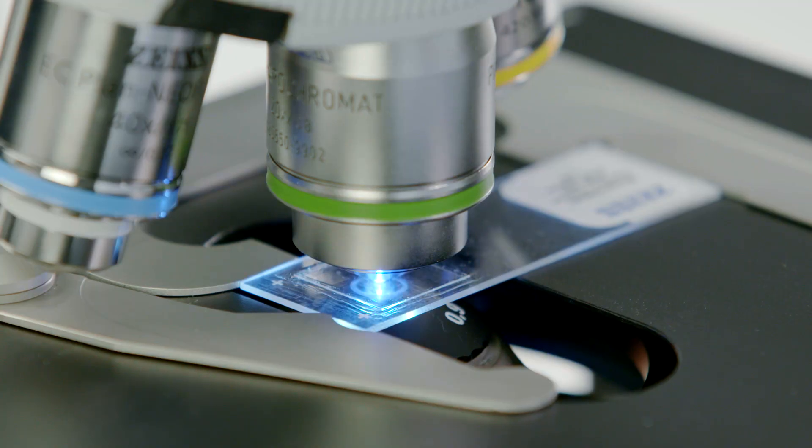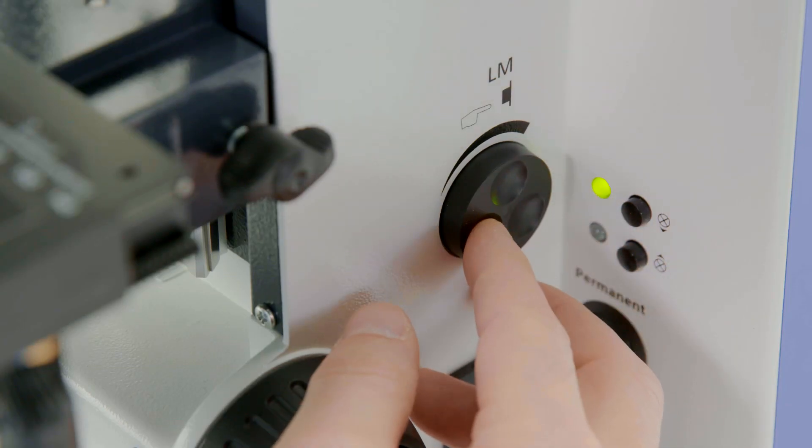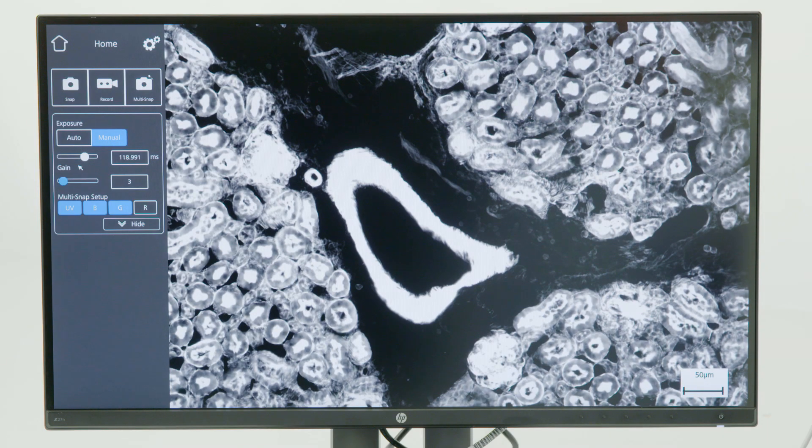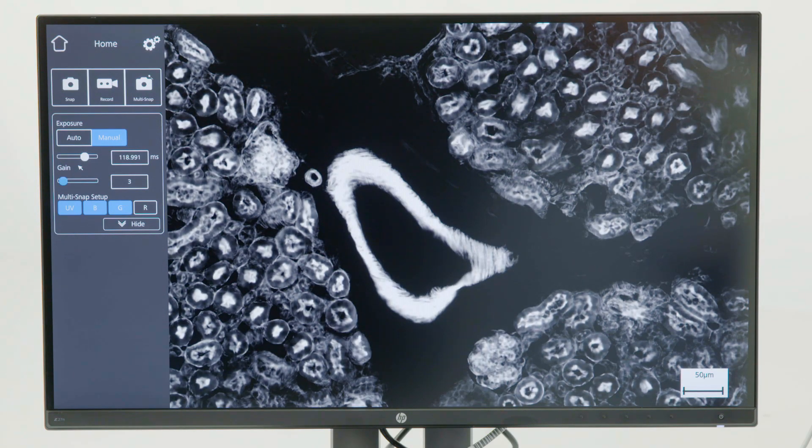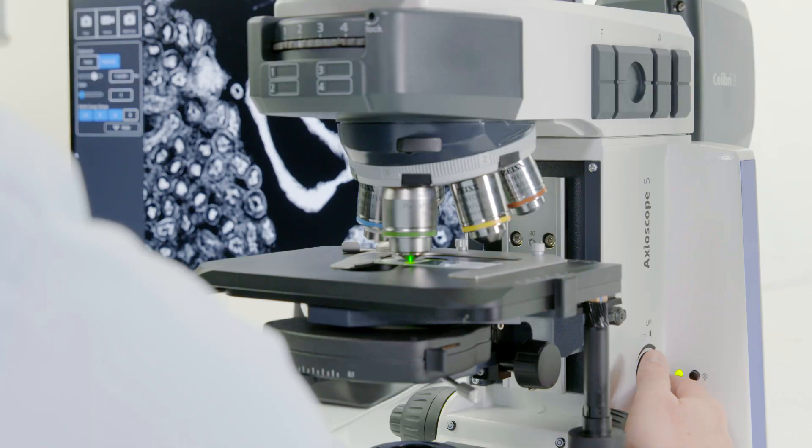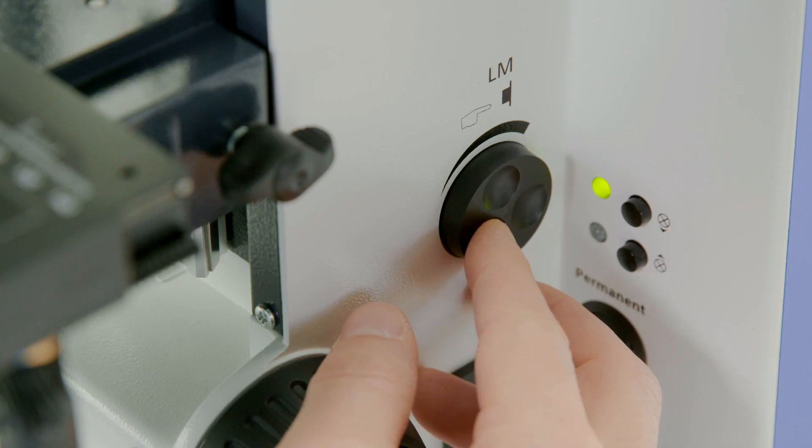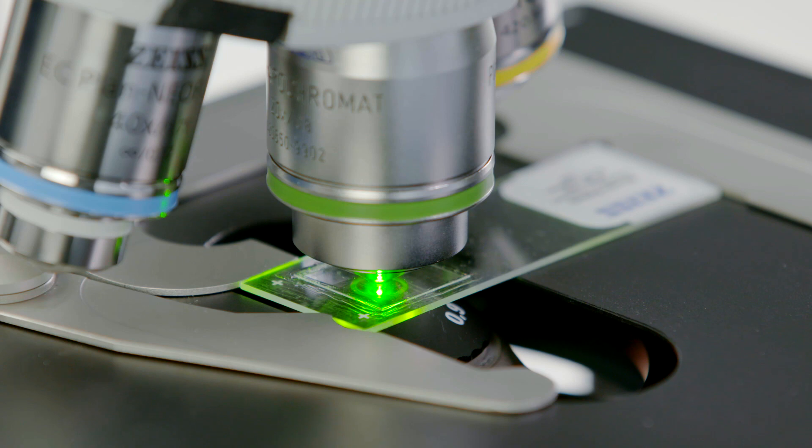Toggle to the blue LED and adapt the LED intensity with the light intensity button on the microscope so that the fluorescence signal on the monitor looks good and is not overexposed. Toggle to the green LED and do the same.